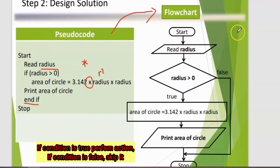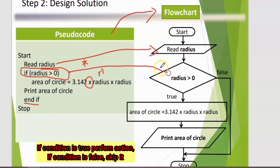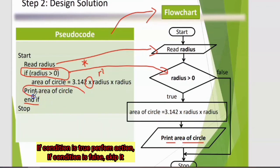To draw the flowchart, use the suitable symbols. For Start, use the capsule shape. Then input: Read radius — use the parallelogram shape. For the condition, draw the diamond shape and write the condition: radius > 0. If the condition is true, execute the statements — calculate area and print area of circle. Output uses the parallelogram shape. If the condition is false, computer skips the process, performs nothing, and goes directly to Stop.